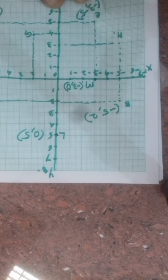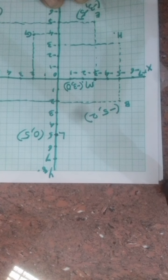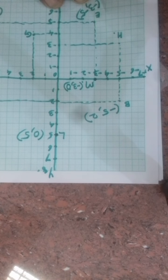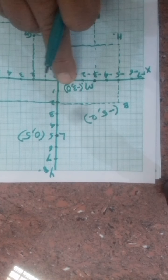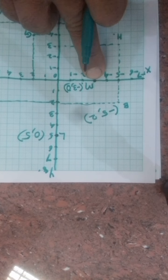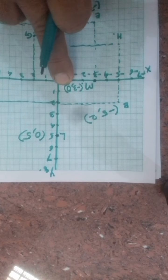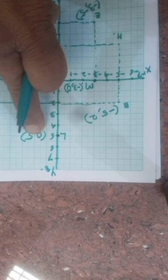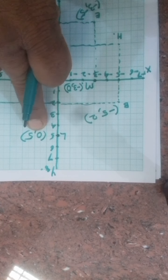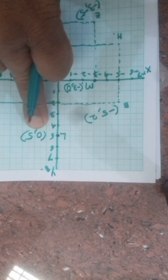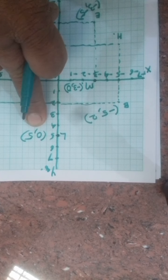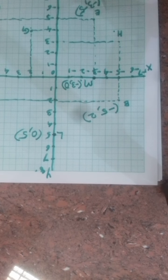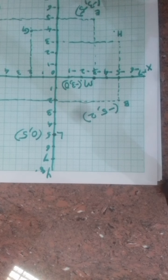Always remember: for a point on the x-axis, the y-coordinate will be 0 — just like point M. And for a point on the y-axis, the x-coordinate is 0. This is how you plot points on the Cartesian plane. Take down these notes and we'll meet in the next class.